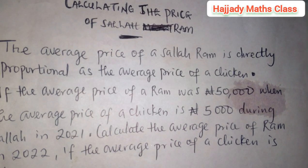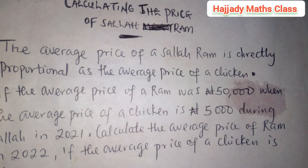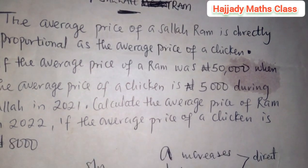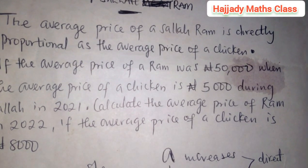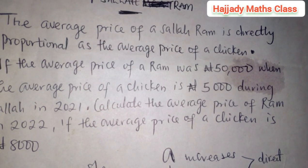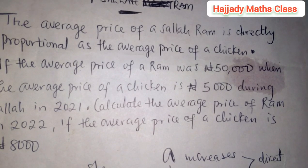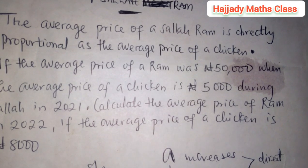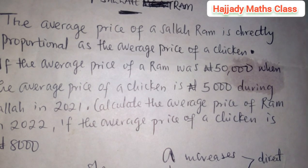Now let's look at this question. It says the average price of a salary is directly proportional to the average price of a chicken. The reason why I'm using direct variation is that as quantity A increases, quantity B also increases — and if both decrease as well, we use direct variation. But if one increases and the other decreases, then we use inverse variation. In this case, we use direct variation because we believe that inflation affects both the price of RAM and the price of chicken.